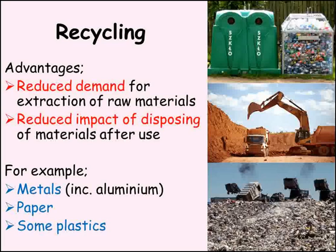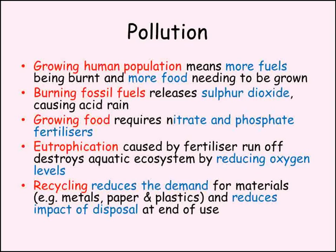The growing human population puts pressure on the environment as the demand for resources such as fuels and food increases. Burning fossil fuels releases sulphur dioxide and causes acid rain. Growing more food requires nitrate and phosphate fertilisers that pollute land and water. When these compounds reach lakes and rivers, they can cause eutrophication, leading to the total collapse of aquatic ecosystems as oxygen levels drop. Indicator species can be used to identify the quality of both air and water. Recycling is one way of reducing our impact on the environment by reducing the demand for materials such as plastic, metal, and paper, and also reducing the damage caused by disposing of these, for example in landfill.